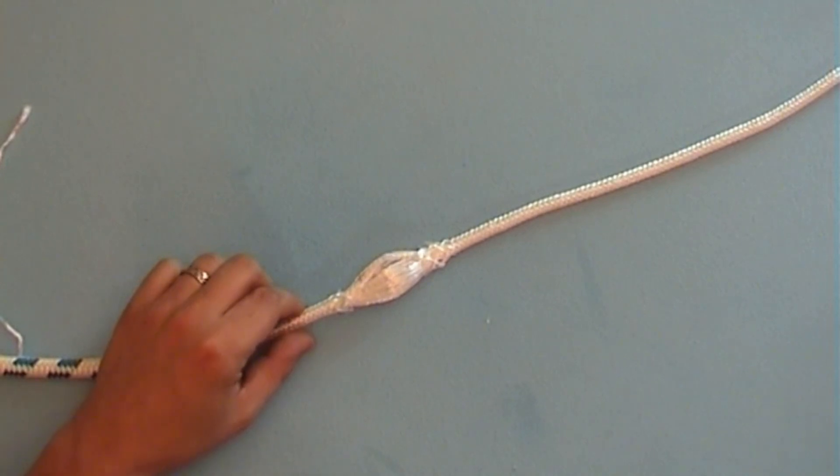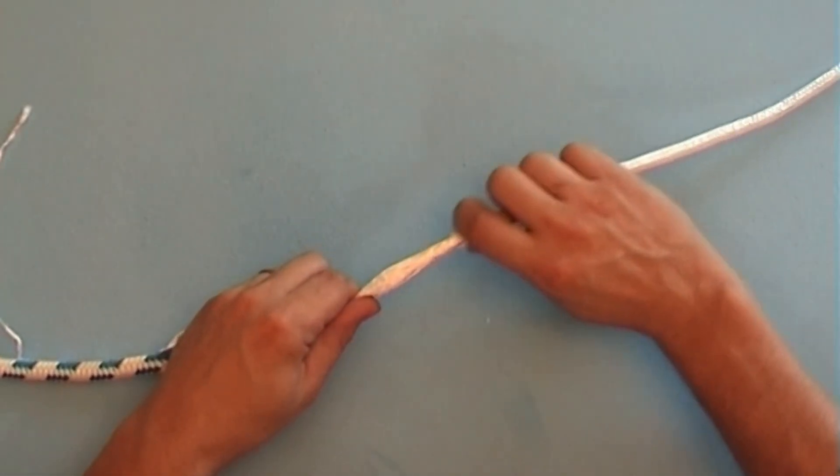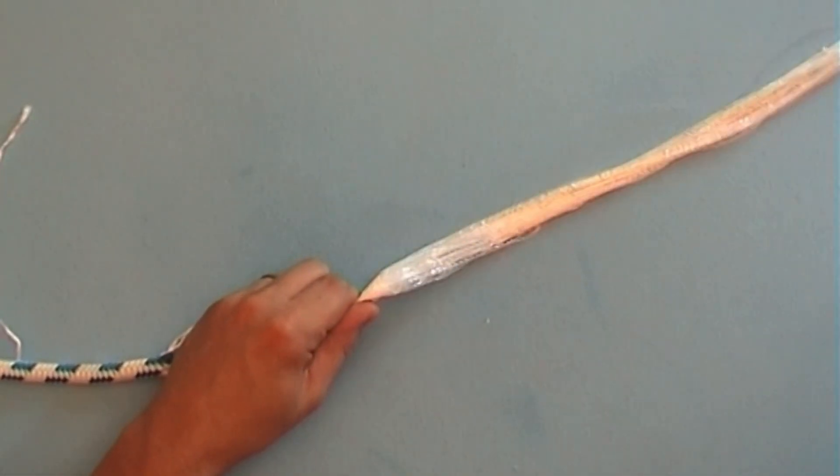Now, here is the core made of parallel fibers. Milk back the cover over the core.